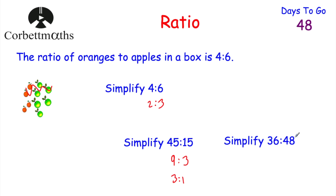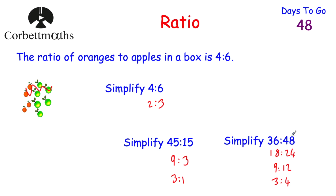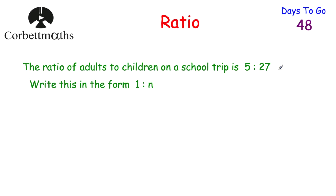For 36 to 48, we can divide both numbers by 2 to get 18 to 24, then divide by 2 again to get 9 to 12, and then divide both by 3 to get 3 to 4. So the simplified ratio is 3 to 4. Well done if you got both of those.